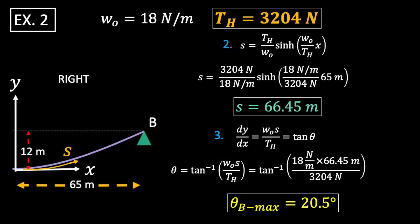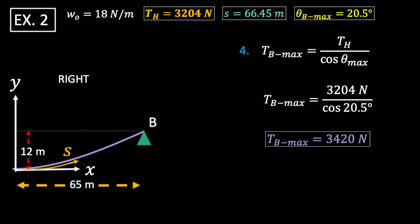We use that length in our tangent relationship to find the angle our cable has at the support. And that angle, as we've learned previously, is the maximum angle on this side of the cable. With some math, we get 30.6 degrees. Then we just plug our values into our final equation. We find that the tension at support B is equal to 3,420 newtons.